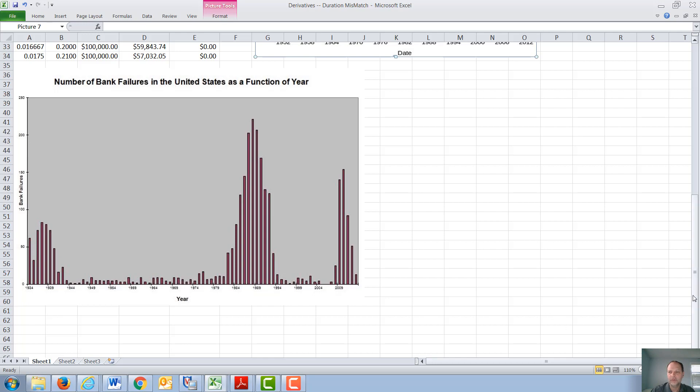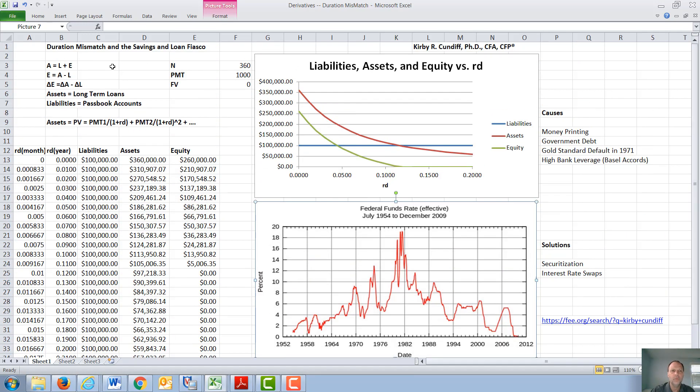The cause of the savings and loan fiasco was what we will call duration mismatch. The general accounting equation is assets equal liabilities plus equity. So equity equals assets minus liabilities, or the change in equity equals the change in assets minus the change in liabilities.